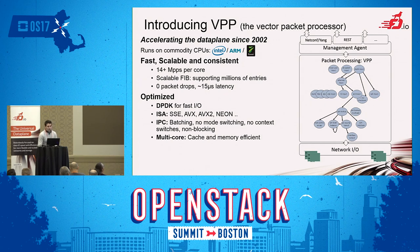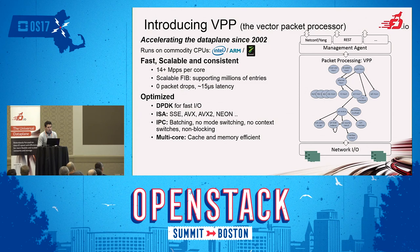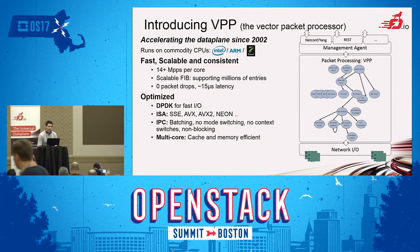VPP stands for Vector Packet Processor. It's a project inside the FD.io Foundation. It's been in development since 2002, open source since 2016, and it runs on commodity hardware. It's fast, scalable, and consistent. It can do up to 40 million packets per second per core with no packet loss, and it has a scalable and hierarchical FIB which provides great performance and update.